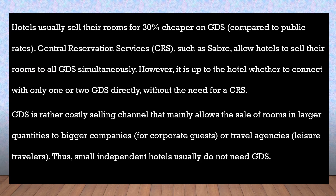Central Reservation Systems i.e. CRS, such as Sabre, allow hotels to sell their rooms on all GDS simultaneously. However, it is up to the hotel whether to connect with one or two GDS directly without the need for a CRS.